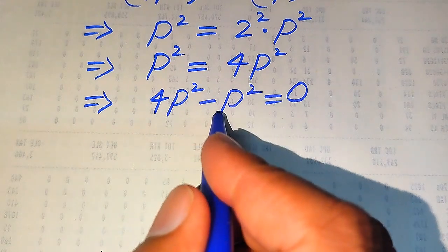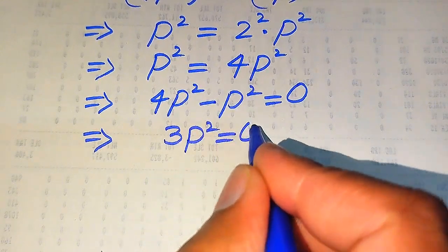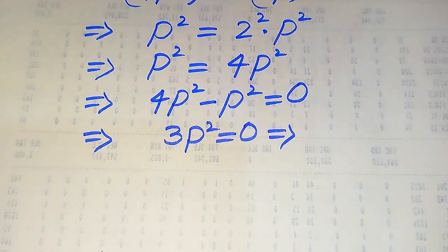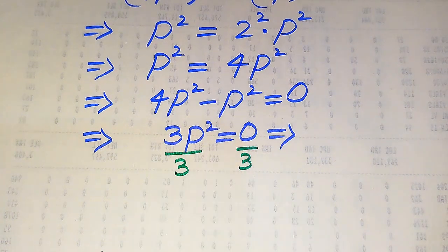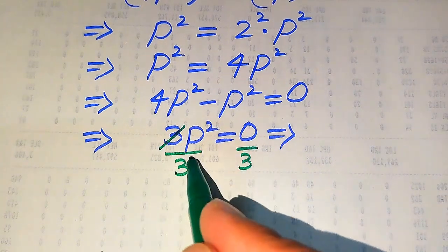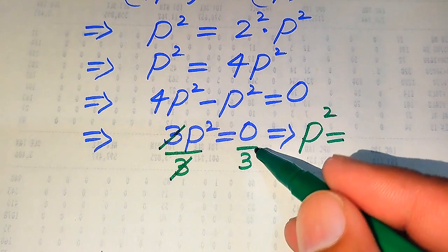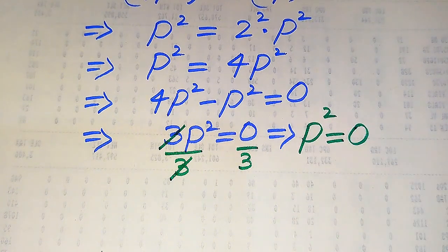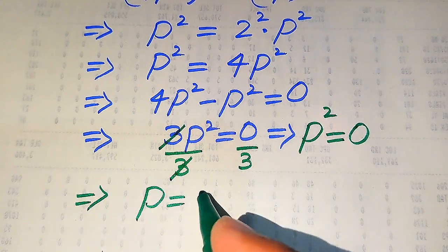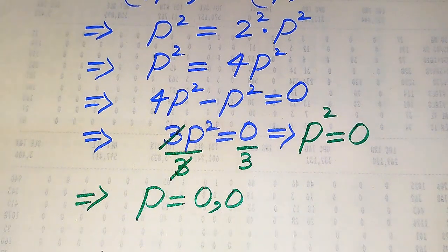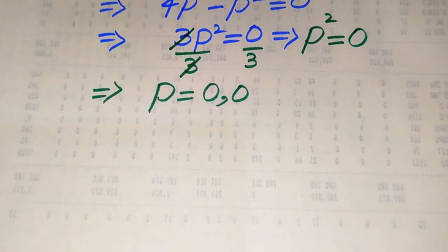So 4p² minus p² becomes 3p² = 0. Now we divide both sides by 3 to eliminate it from the left-hand side. The 3s cancel and we get p² = 0/3, which equals 0. Since p² = 0, we get p = 0. So we obtain only one root of the given equation: p = 0.